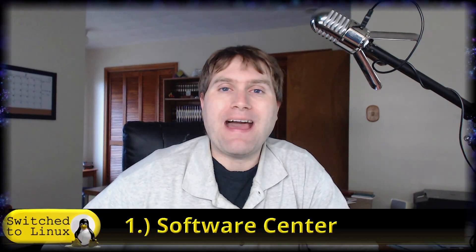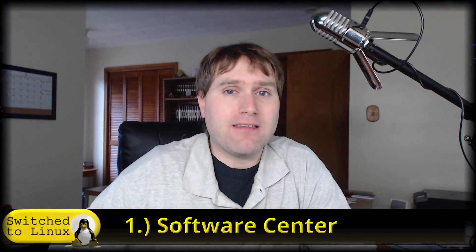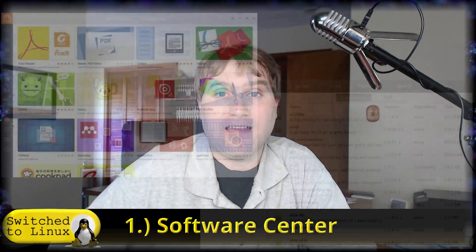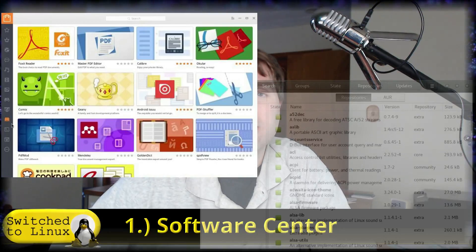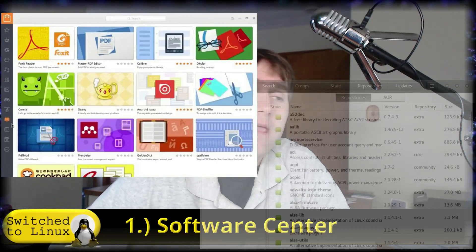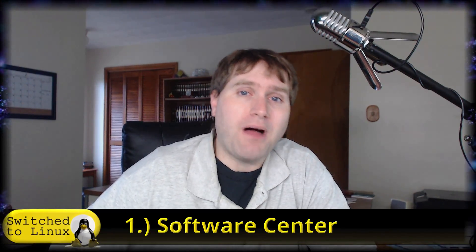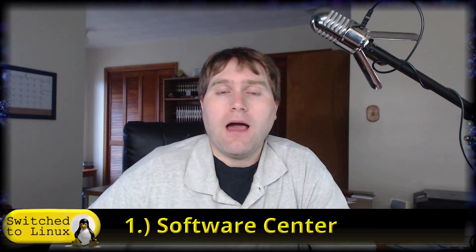Number one: the Deepin OS contains its own namesake software center versus Manjaro having the Pac-Man GUI package manager. I really like the Deepin software center — it is probably the nicest, classiest looking software center I have seen in Linux. Deepin is just way better than Linux Mint 19's new software center, and Discovery is not too bad either. Deepin software center is very polished, beautiful, and easy to navigate with a lot of information and easy installation.